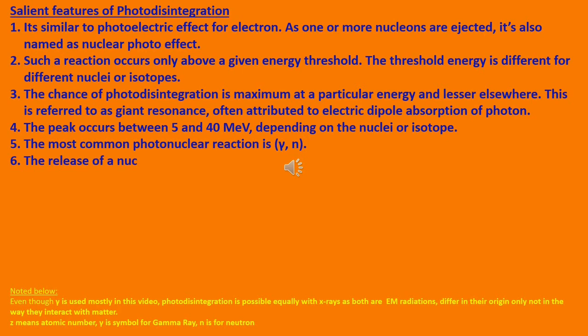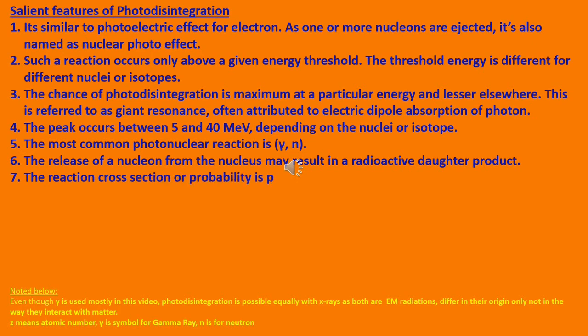The release of a nucleon from the nucleus may result in a radioactive daughter product. The reaction cross section or probability is proportional to Z.